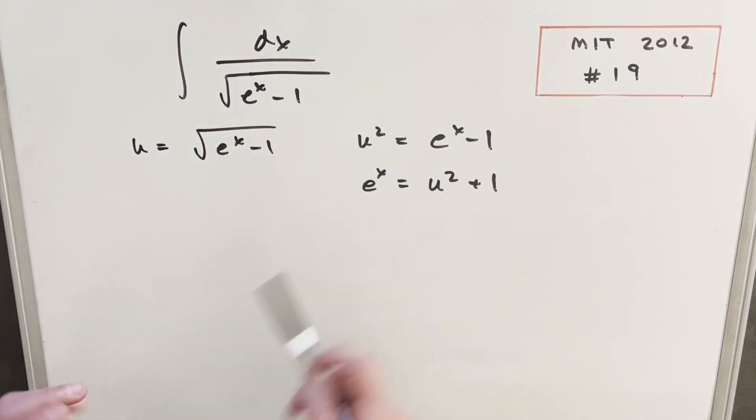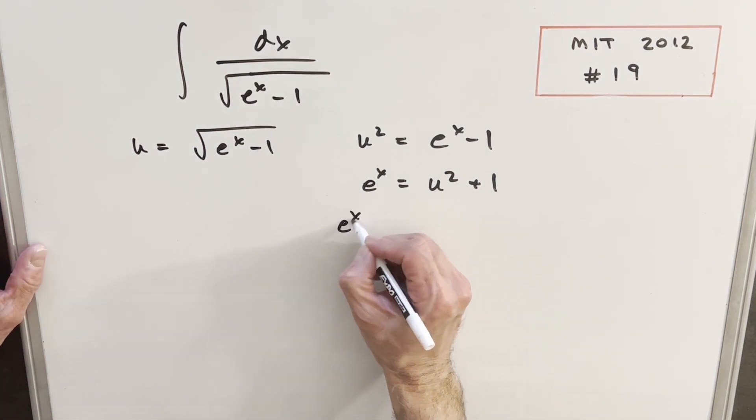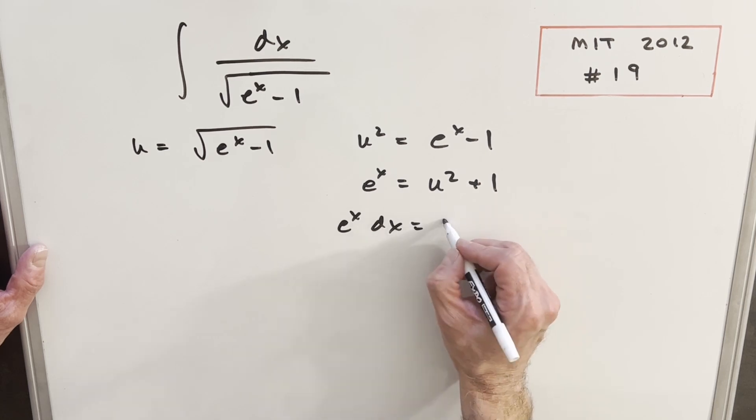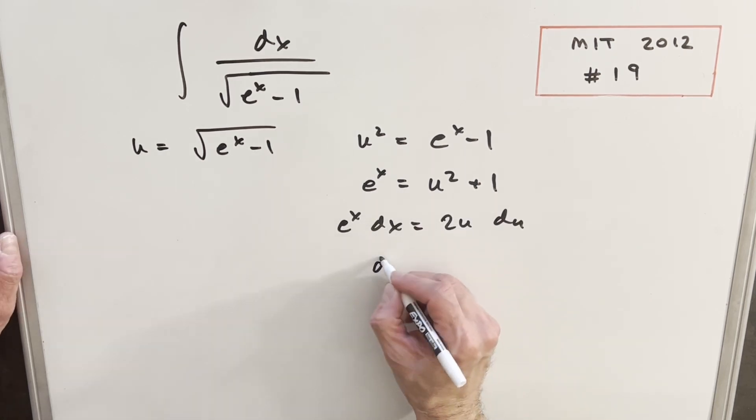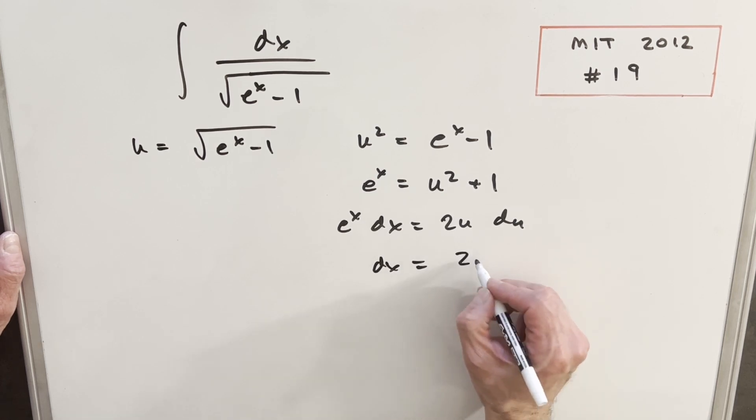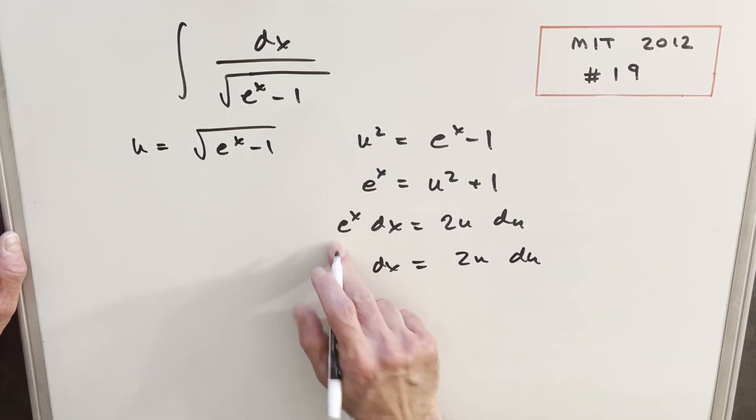I think what I'll do is take the derivative over here. So we'll have e to the x dx equals, derivative of this is going to be just 2u. From here, what I'll do is solve for dx. So we'll have dx equals 2u du dividing by the e to the x.